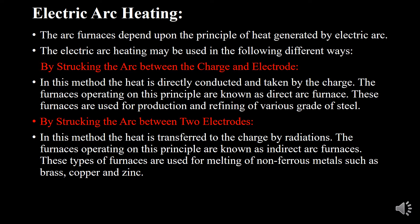The second method is by striking the arc between two electrodes. In this method, the heat is transferred to the charge by radiation. The furnaces operating on this principle are known as indirect arc furnaces. These furnaces are used for melting of non-ferrous metals such as brass, copper, and zinc.